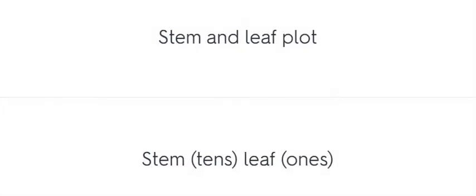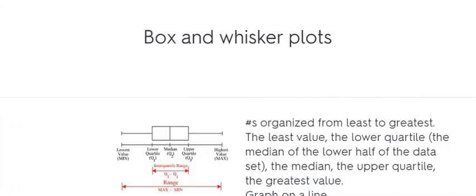Stem and leaf plot. Stem, leaf. Box and whisker plots. Organized from least to greatest. The least value, the lower quartile, the median, the upper quartile, the greatest value. Graph on a line.